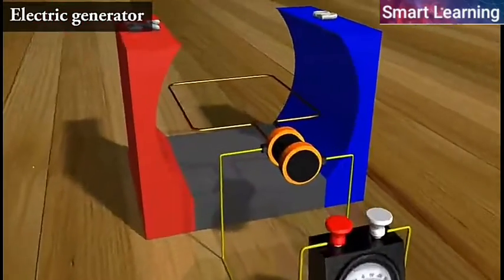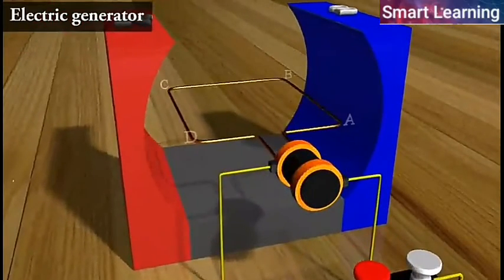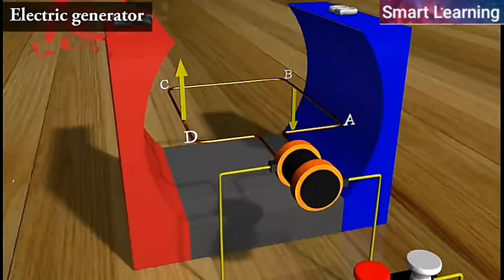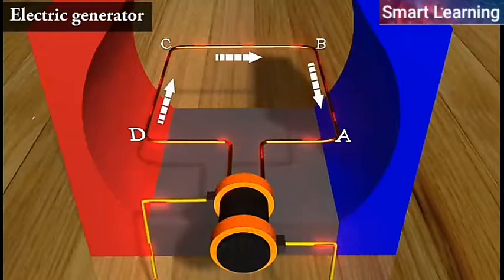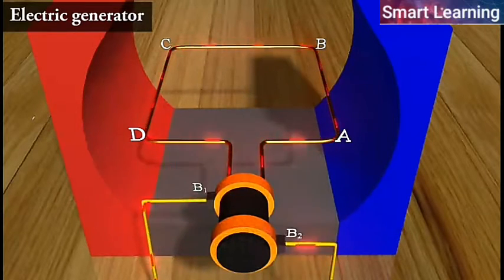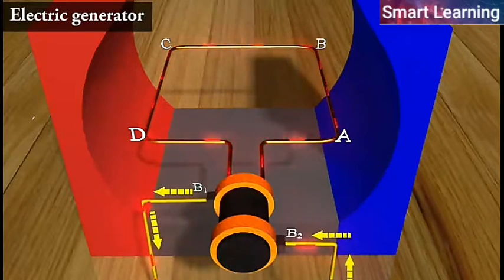After half a rotation, arm CD starts moving up and AB starts moving down. As a result, the directions of the induced currents in both the arms change, giving rise to the net induced current in the direction DCBA. The current in the external circuit now flows from B1 to B2.